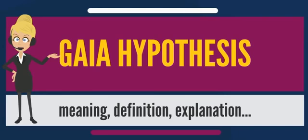The hypothesis was formulated by the chemist James Lovelock and co-developed by the microbiologist Lynn Margulis in the 1970s. The hypothesis was initially criticized for being teleological and contradicting principles of natural selection, but later refinements resulted in ideas framed by the Gaia hypothesis being used in fields such as earth system science, biogeochemistry, systems ecology, and the emerging subject of geophysiology.